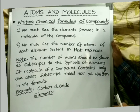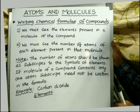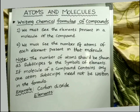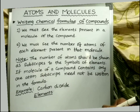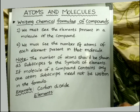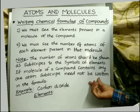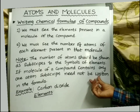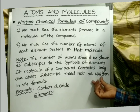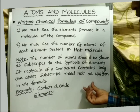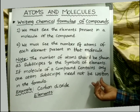Another thing is, if a molecule of a compound has only one atom of a specific element, then we need not show the subscript 1 in such a case. Which means if only one atom is there, we need not show the number 1 as a subscript — we can exclude it.